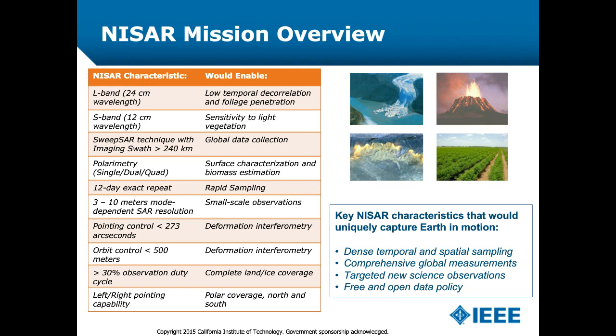The applications we're looking at are cryosphere — changes in glaciers — natural hazards, including volcanoes, earthquakes, and fires, and agriculture and biomass. Technical specs include pointing this very large structure to a fraction of a degree to accomplish the interferometry, and controlling the orbit to within 500 meters every 12 days. We cover all land and ice surfaces, looking left and right to cover both poles. The key characteristics are dense temporal and spatial sampling, comprehensive measurements, and new techniques using L- and S-band polarimetric data together. ISRO has agreed with NASA's policy of free and open data.